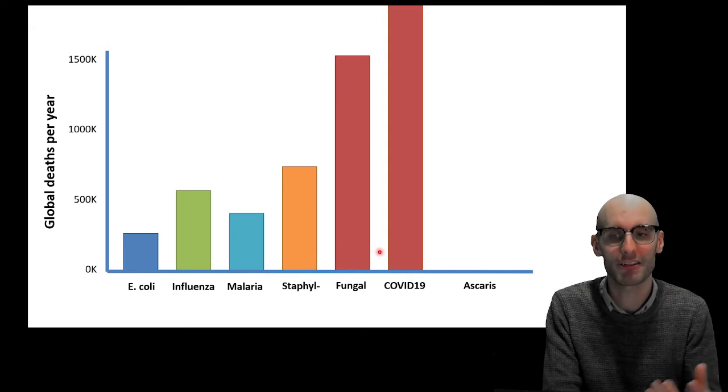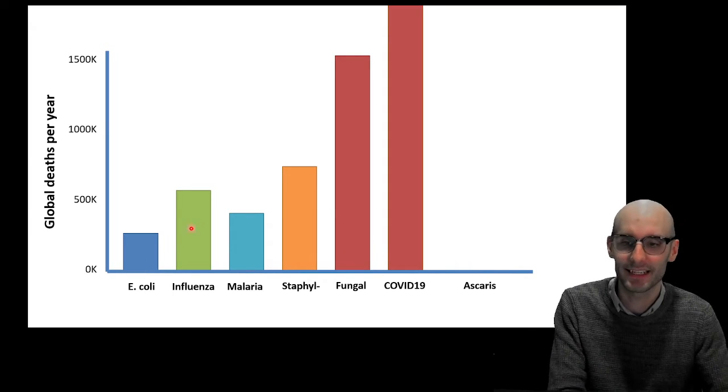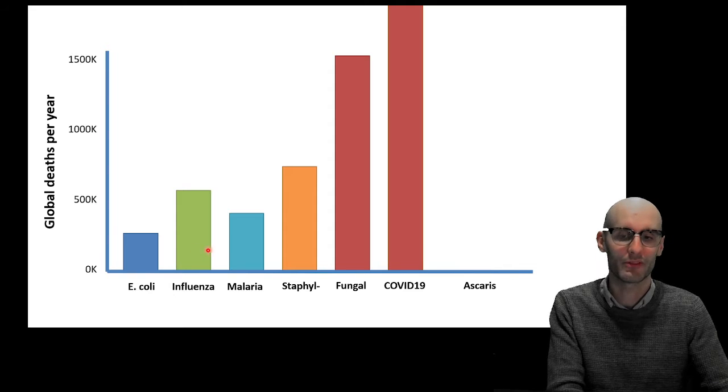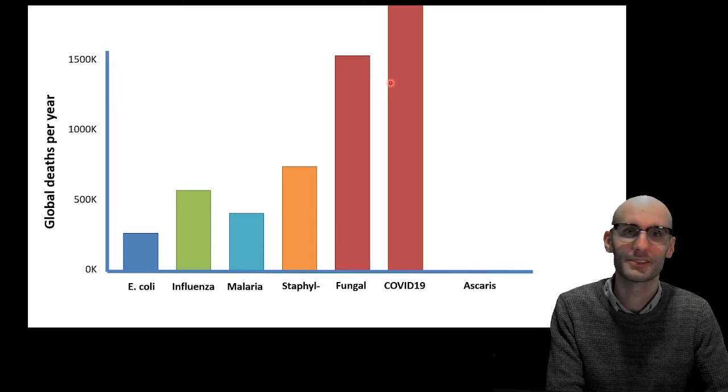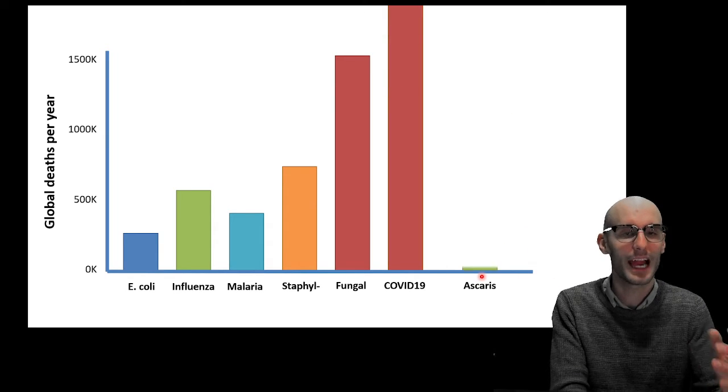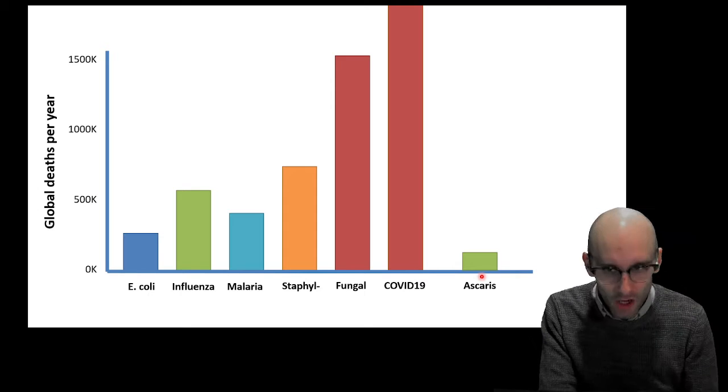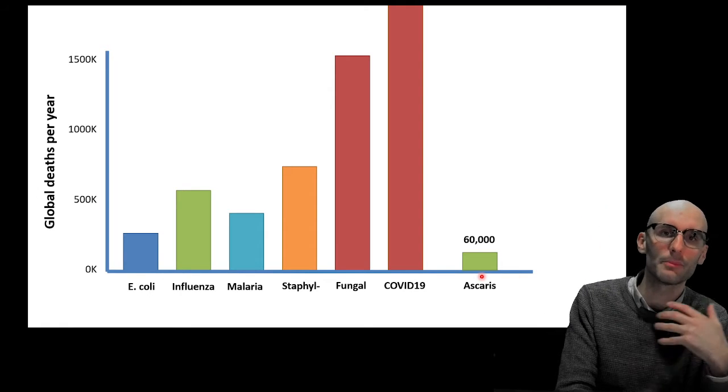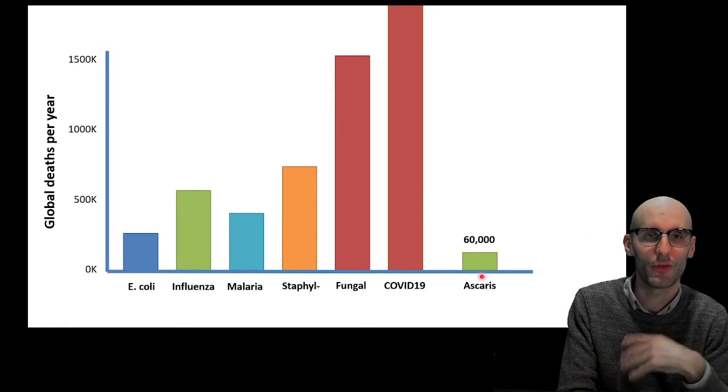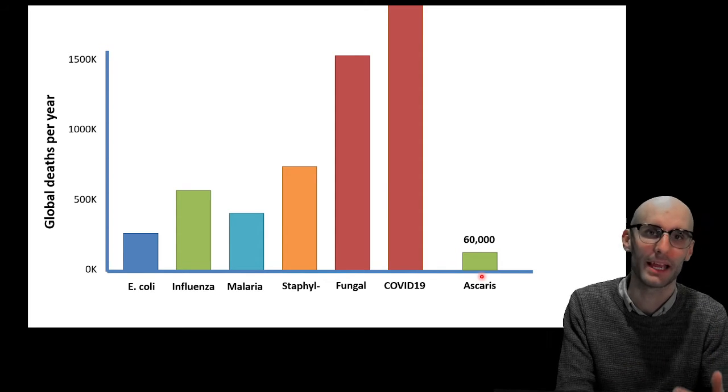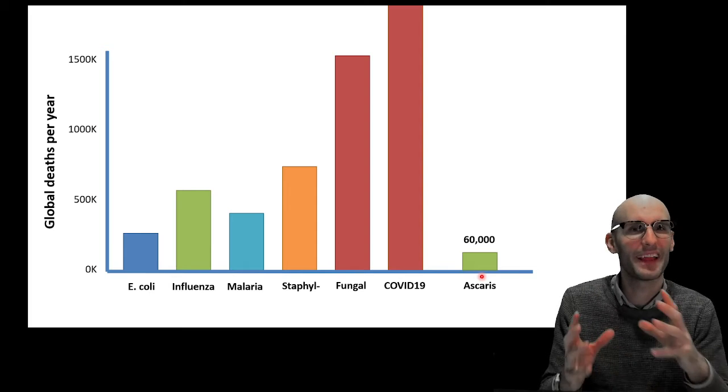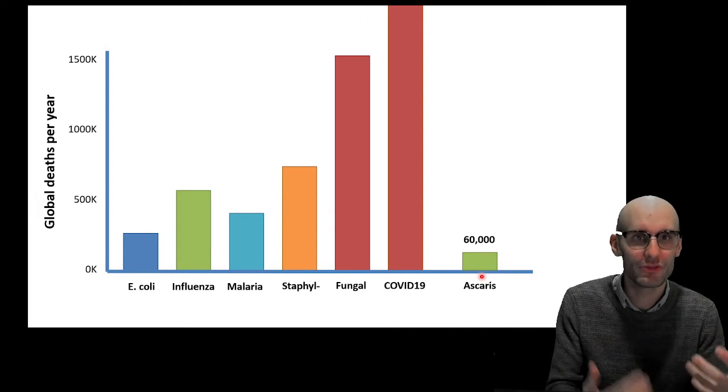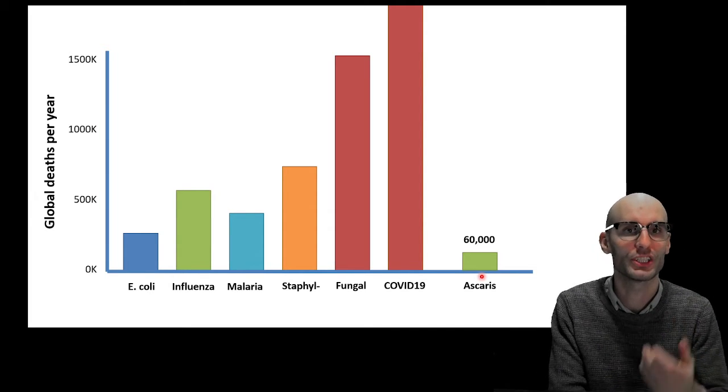Where does Ascaris sit on the global deaths per year scale? So here's some diseases: E. coli, which is mostly diarrhea, influenza, malaria, staphylococcal infections, fungal infections. COVID-19 is 4 million a year so it's way off the scale. Where does Ascaris sit? It sits quite low, probably around 60,000. But again, I mentioned in the previous video these numbers are very hard to estimate because very few people die directly from it. They die more indirectly from things like malnutrition or immune suppression.